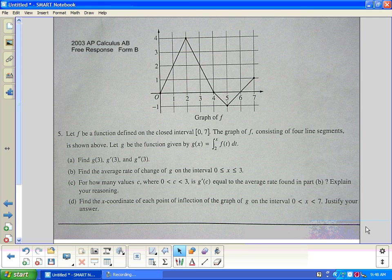2003 AP Calculus AB Free Response Form B. This is problem number 5. It shows the graph of function f, which is obviously not differentiable at certain points. Let f be the function defined on the closed interval 0 to 7. The graph of f shown is four line segments. Let g be the function g(x) equals the integral from 2 to x of f(t) dt.